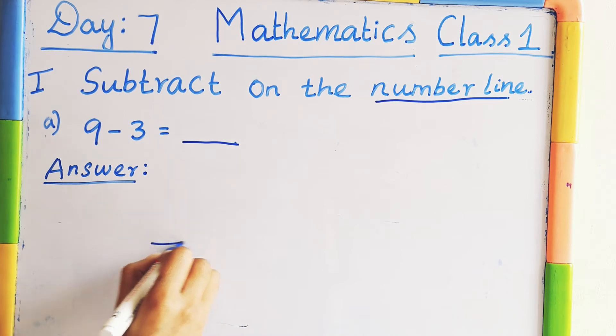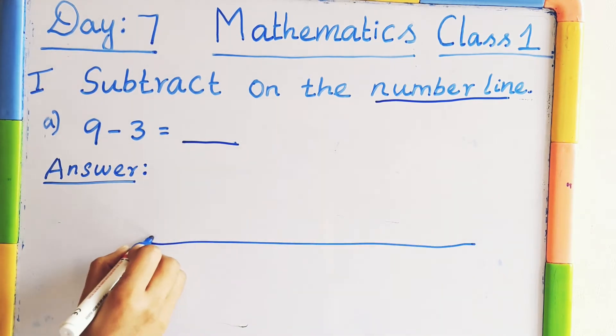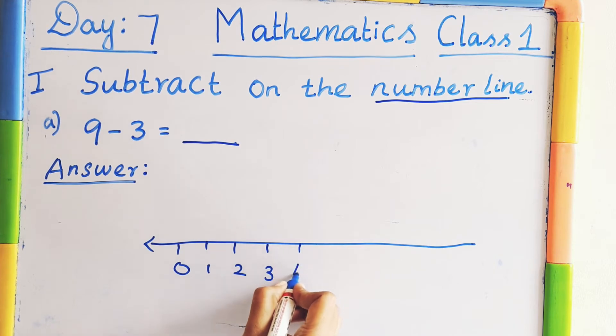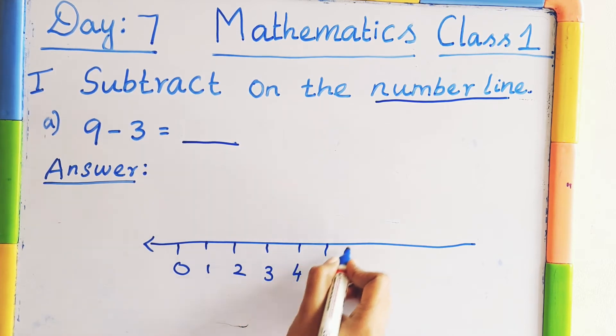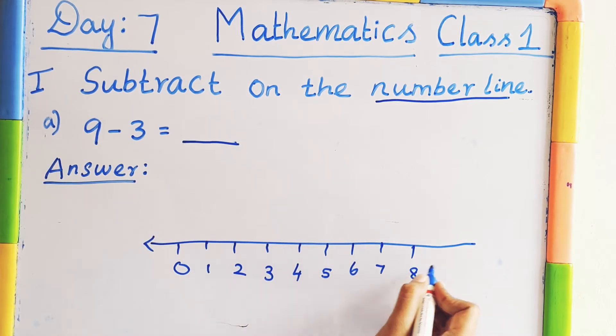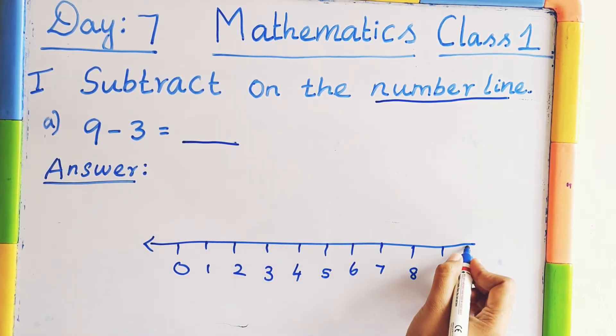So first we have to draw a line from 0 to 10. [Drawing and labeling: 0, 1, 2, 3, 4, 5, 6, 7, 8, 9, 10.]